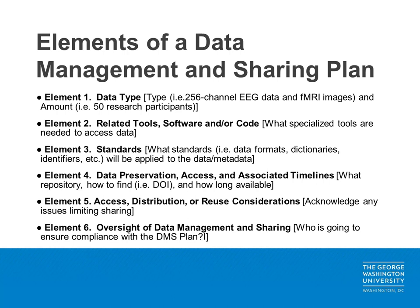For element five, researchers should identify any access, distribution, or reuse considerations. This element should be used to identify sharing limitations, such as those associated with human participants. Lastly, for element six, researchers should identify the individual or group who is going to ensure oversight of the data management and sharing plan. This is often the PI, but can also occasionally include other institutional groups.